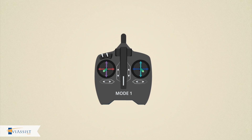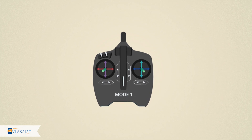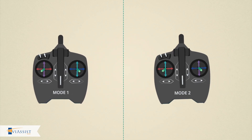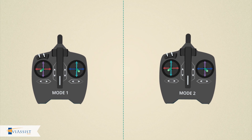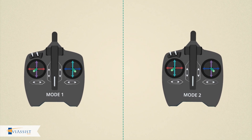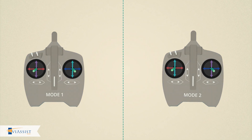Another common mode is mode 1. In mode 1, power swaps from being on the left to being on the right. This means pitch must move from the right across to the left.